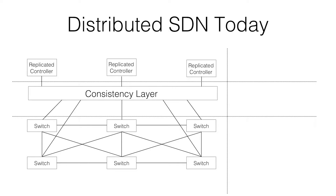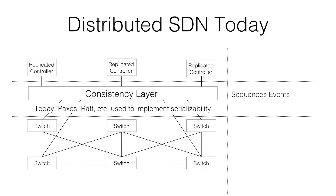Once you have multiple controllers, they should talk through some consistency layer that makes sure they all see the same sequence of network events. This is exactly the property needed for replication or replicated state machines. For a lot of controllers today, they're using Paxos, Raft, or other coordination mechanisms, which are pretty heavyweight.